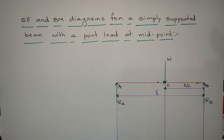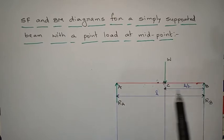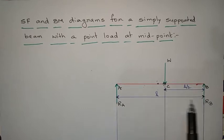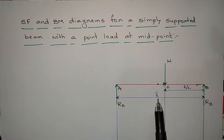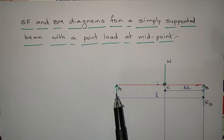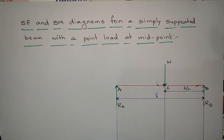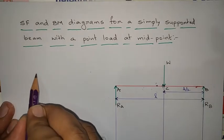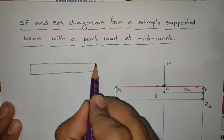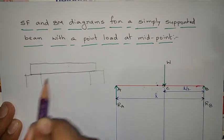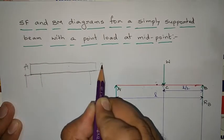Let us consider a simply supported beam. Simply supported beam means it is supported with two simple supports. This is beam A-B. The red color represents the beam and the green color represents the support reactions.